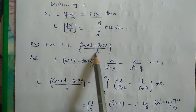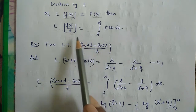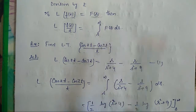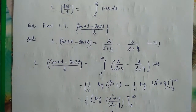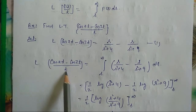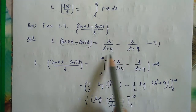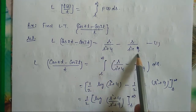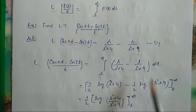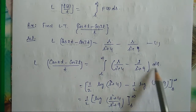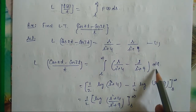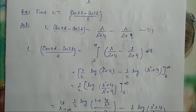Now, since I have to divide by t, I will apply the division-by-t rule. I will integrate the right-hand side from s to infinity. So the Laplace transformation of (cos2t − cos3t)/t equals the integral from s to infinity of [s/(s²+4) − s/(s²+9)] with respect to s, because the transformation is a function of the parameter s.